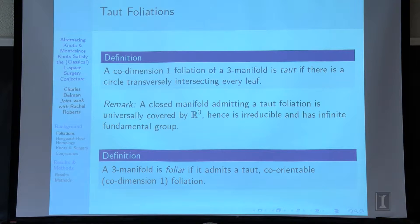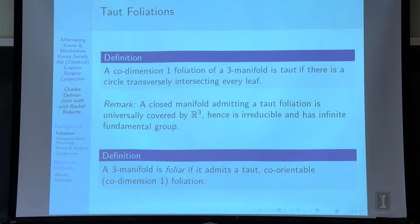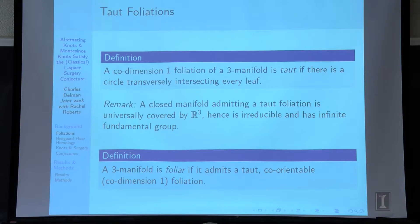To save words, I'm going to make the following definition — the word is "foliar." A three-manifold is foliar if it admits a taut co-orientable co-dimension 1 foliation.